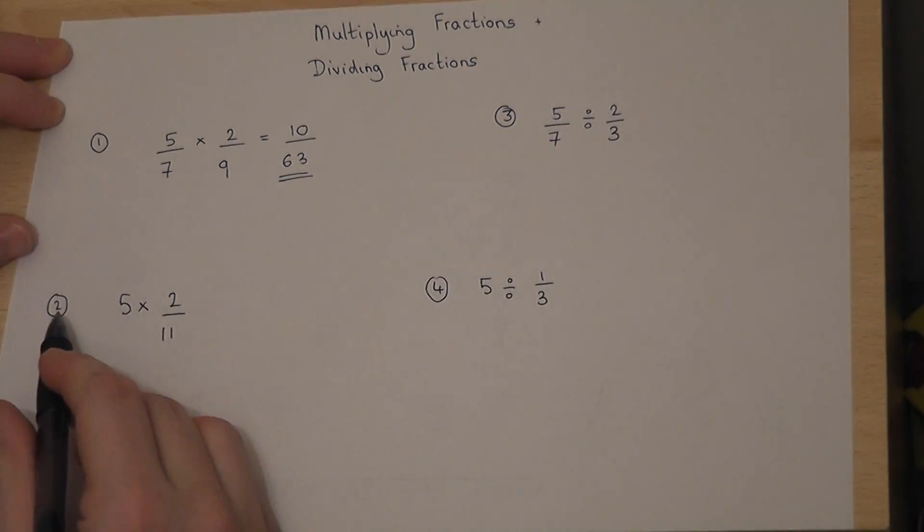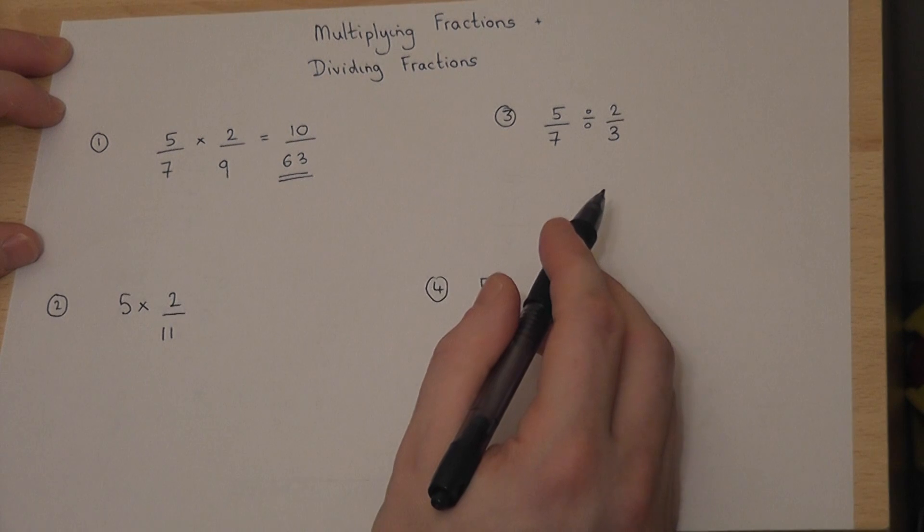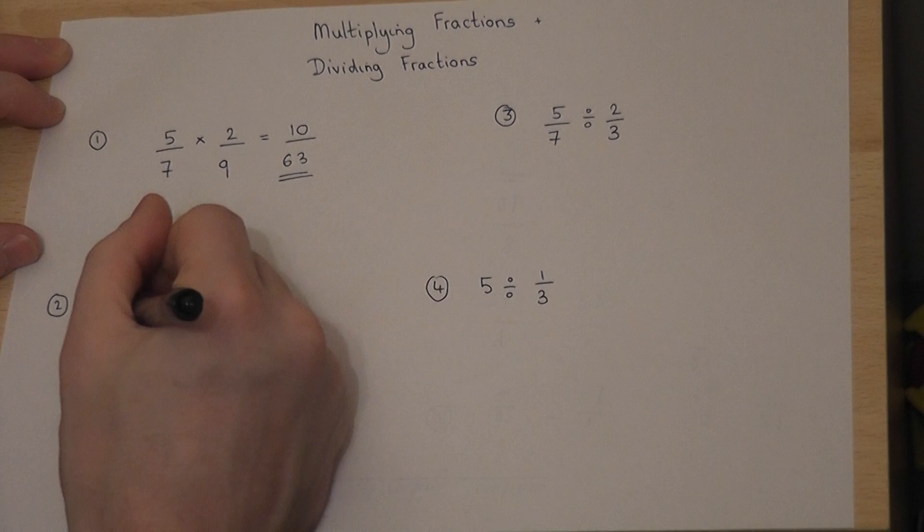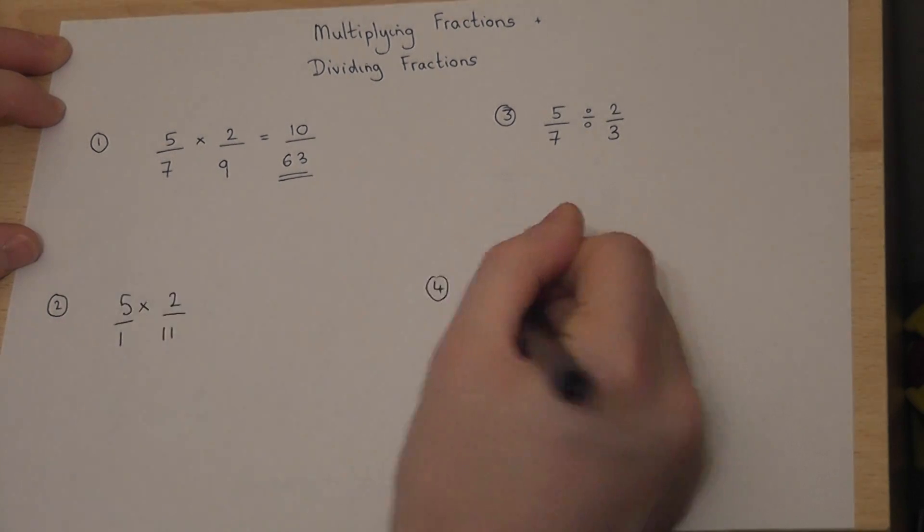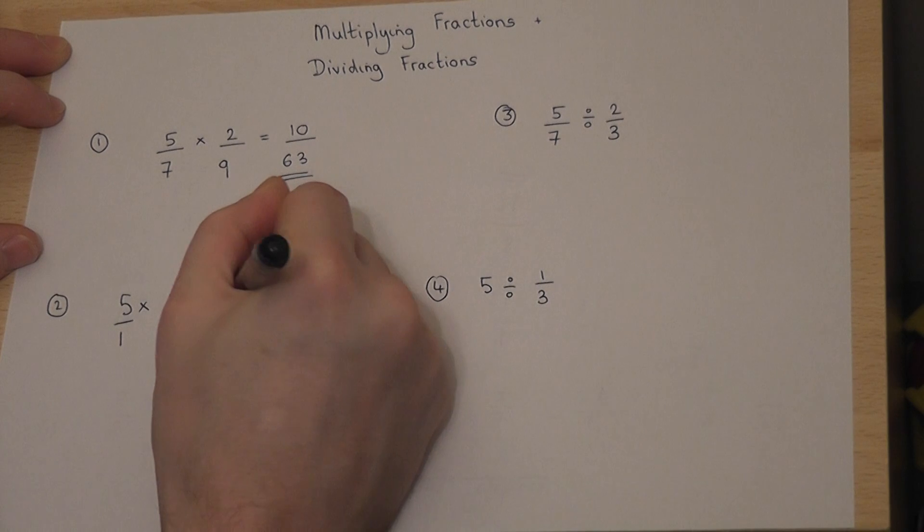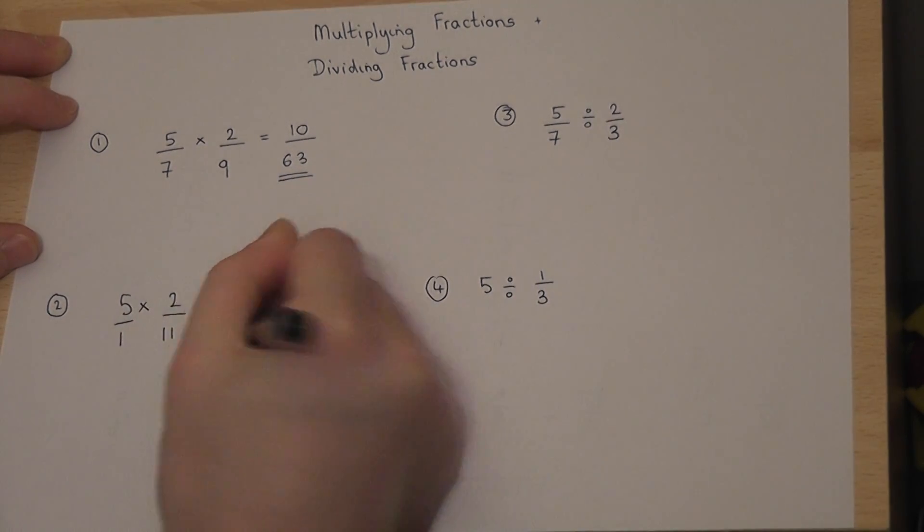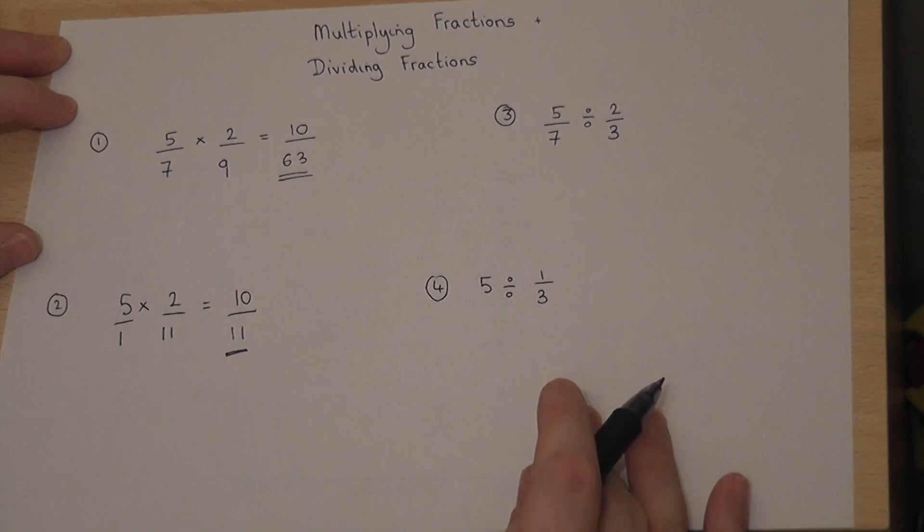In the second example, we have an integer times by a fraction. The trick here is to imagine 5 as 5 over 1. Then, 5 times 2 is 10, and 1 times 11 is 11. So the answer is 10 over 11. So timesing fractions is really rather easy.